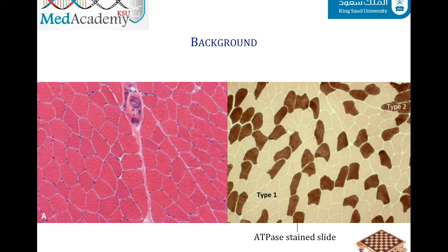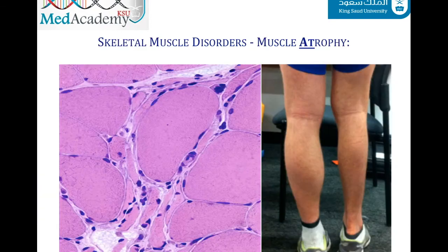A normal skeletal muscle shows uniform, tightly packed muscle fibers with peripherally placed nuclei. In the center of the image we can also see an intrafascicular septum containing a blood vessel.